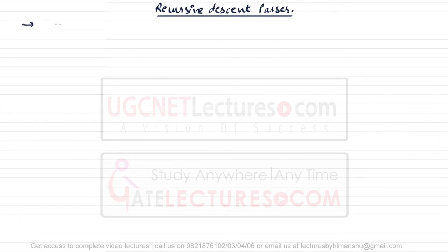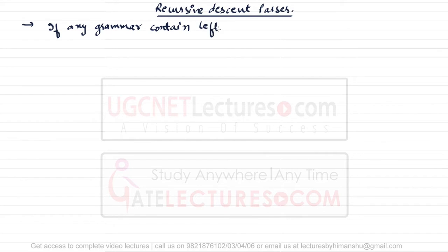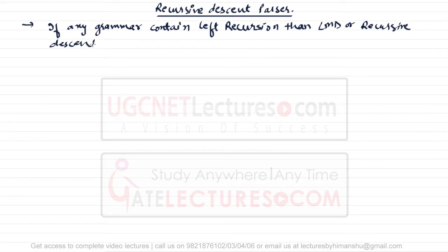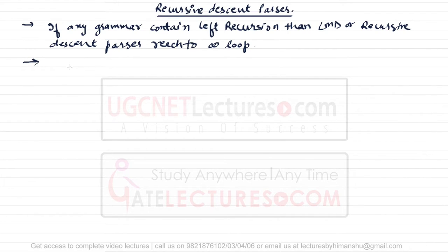The first assumption: if any grammar contains left recursion, then the leftmost derivation (LMD) or the recursive descent parser will reach an infinite loop. It will loop infinitely, which means we cannot use left recursion in this parser. Therefore, at minimum we need a grammar that is right recursive.